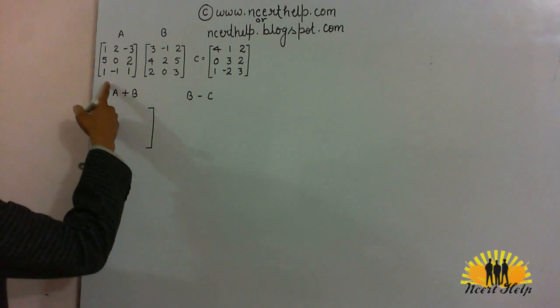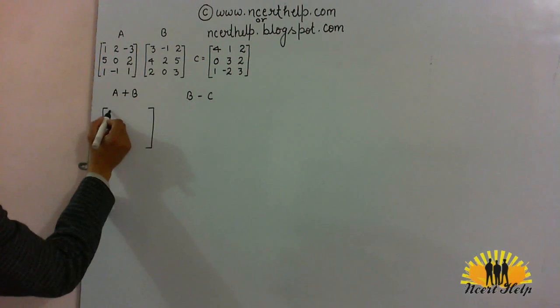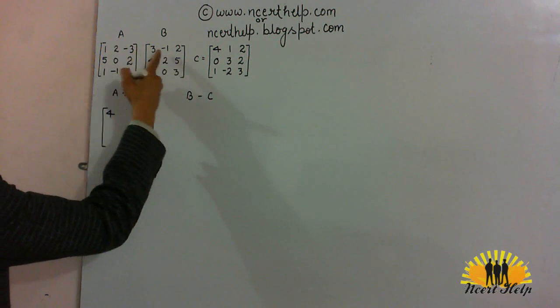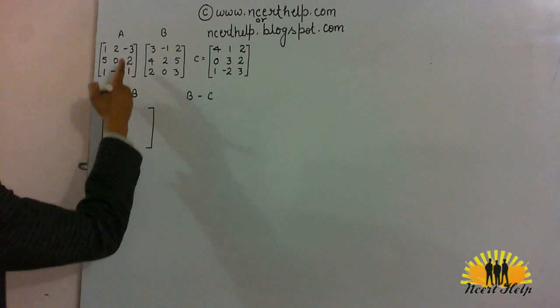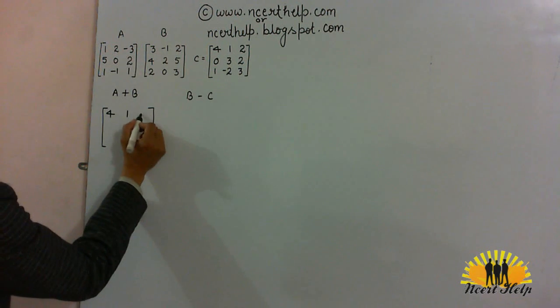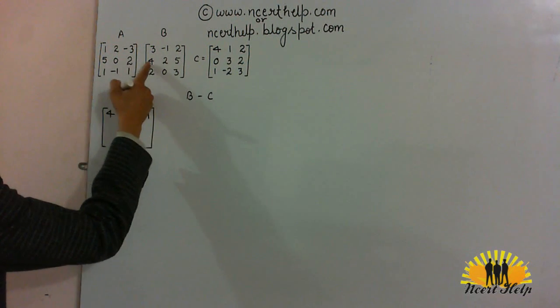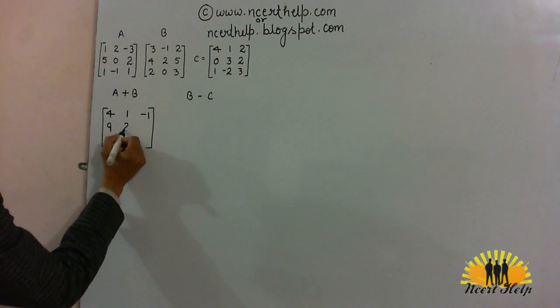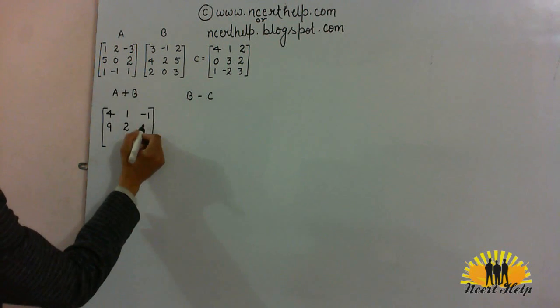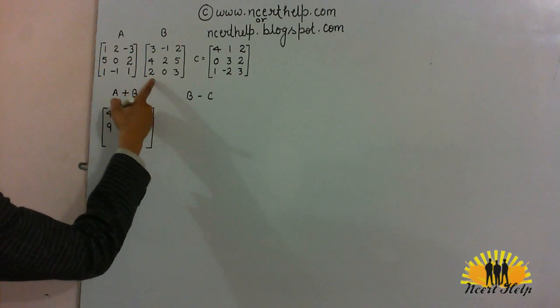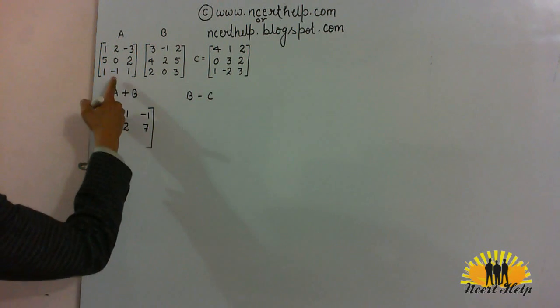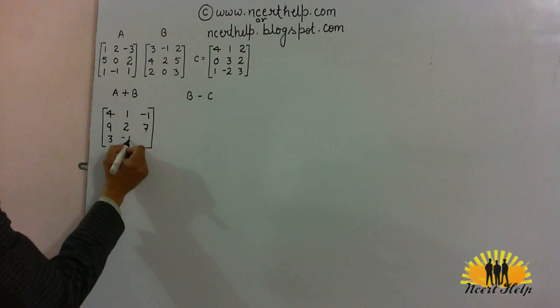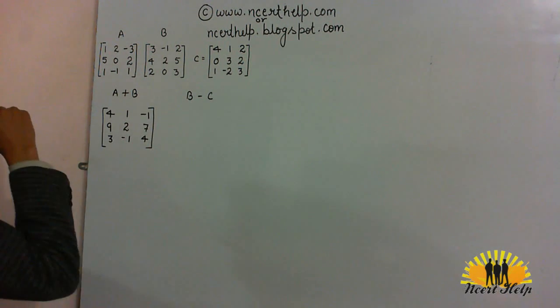Just add their corresponding elements. 1 plus 3, 4. 2 minus 1, 1. Minus 3 plus 2, minus 1. 5 plus 4, 9. 0 plus 2, 2. 2 plus 5, 7. 1 plus 2, 3. Minus 1 plus 0, minus 1. 1 plus 3, 4.